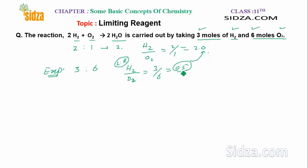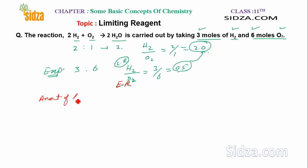If the ratio had come out to 2.5 rather than 0.5, then oxygen would be the limiting reagent. But here hydrogen is the limiting reagent and oxygen is the excess reagent. The amount of product formed depends on the limiting reagent.